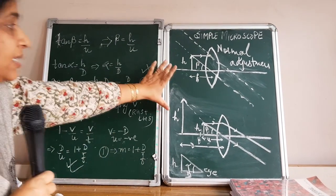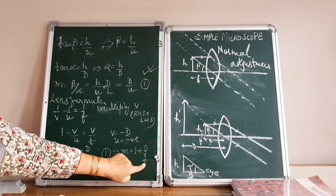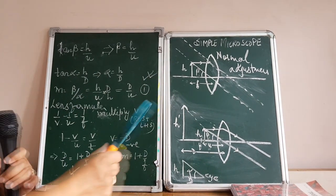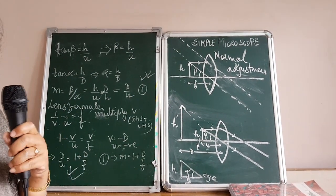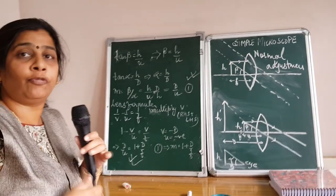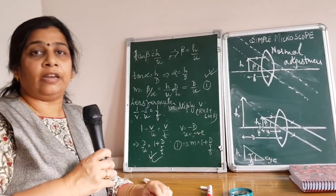That means in both cases, focal length is always in the denominator, which means if I want a simple microscope to magnify maximum, its focal length should be very, very less. That means a convex lens of short focal length is a good magnifying glass.